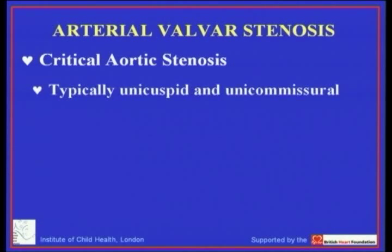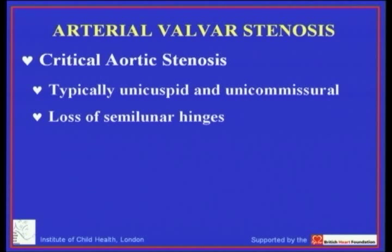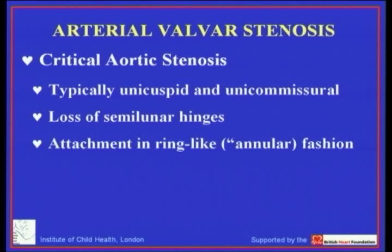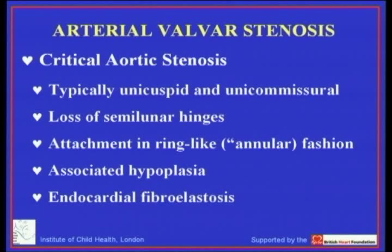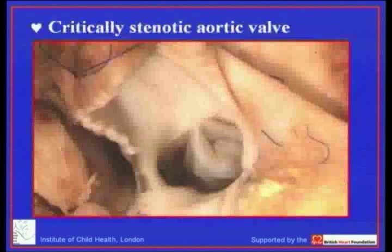When we look at critical aortic stenosis the situation is described as unicuspid and unicommissural, but again it is due to loss of the semilunar hinges, and paradoxically we truly have an annular attachment of the leaflets. Typically there is also associated hypoplasia of the aortic root and ascending aorta, and in the most severe cases additional endocardial fibroelastosis, which unequivocally places these examples in the ballpark of hypoplastic left heart syndrome.